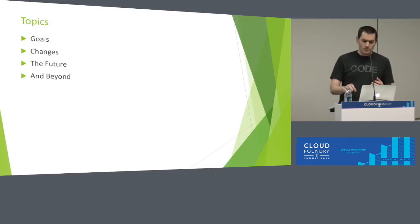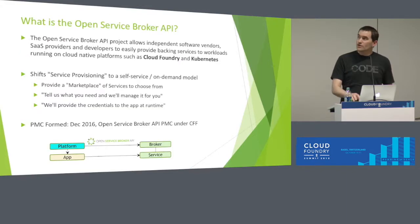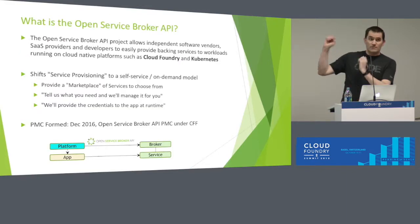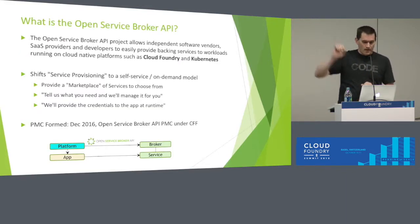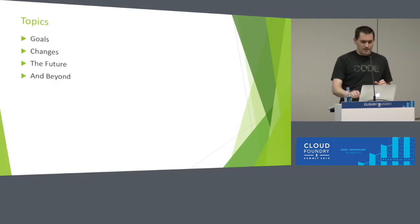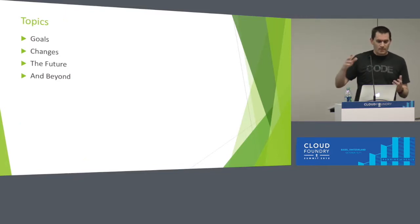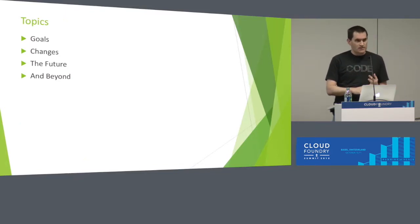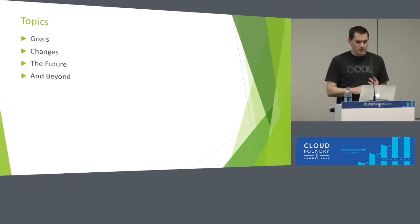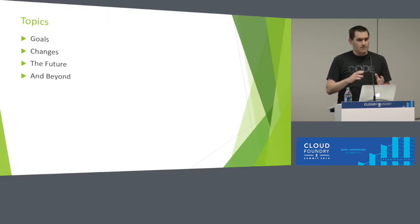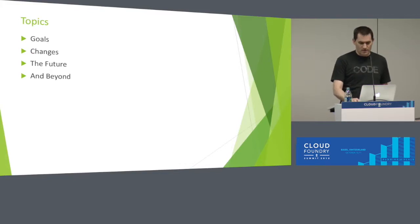So if you don't know the Open Service Broker API, this isn't the talk for you. I do have one slide that briefly summarizes it, but I'm not going to talk to it. Instead, I'm going to talk about the goals of the working group, the changes that have gone into the spec since we started, where we're going with it in terms of futuristic things, and then some things beyond the spec itself that may be of interest to you guys.